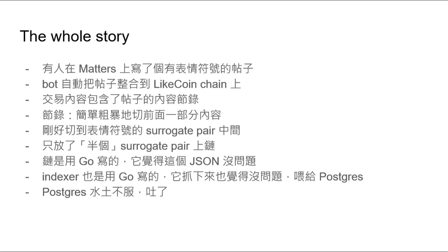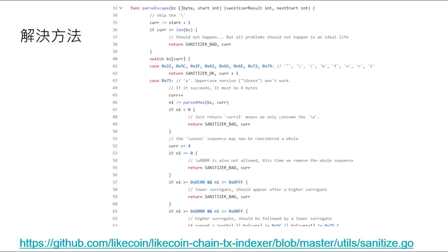這樣子就放上去鏈。鏈是用Go寫的，我們剛才說到Go覺得這個是一個合法的JSON，就不管三七二十一弄上去，然後Index又趴下來。Index也是用Go寫的，插上來覺得也沒問題，OK，然後就吐給PostgreSQL，PostgreSQL然後就吐了。